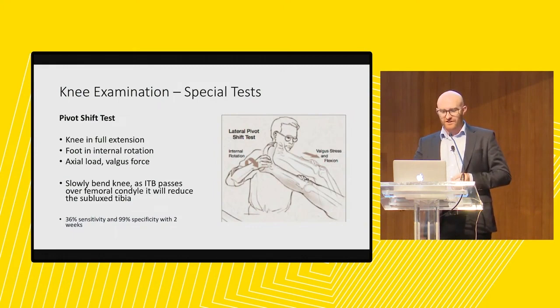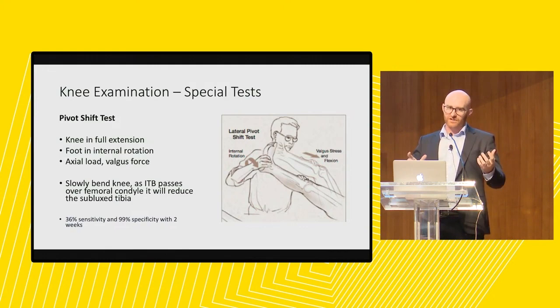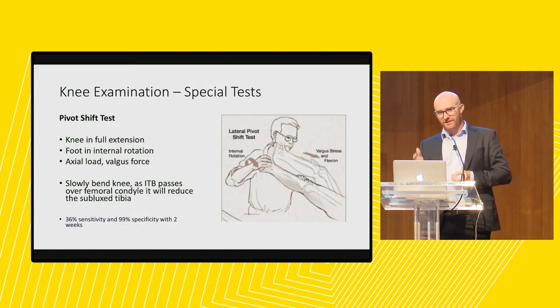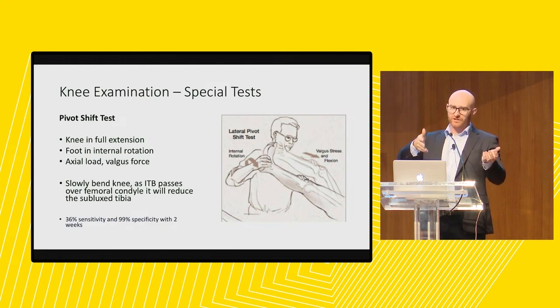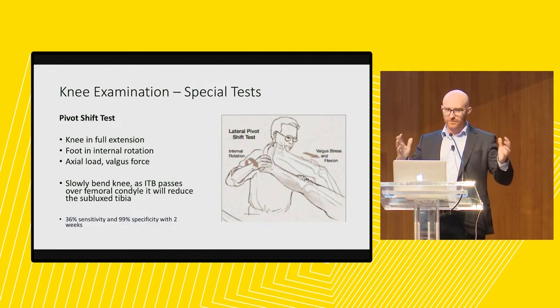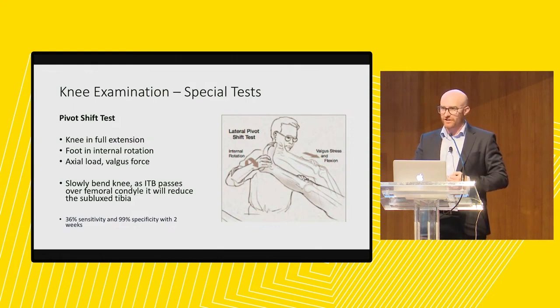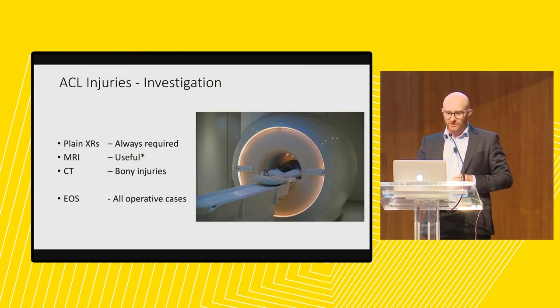The pivot shift test can't be done for acute injuries because they're too sore. It is very specific if you have a positive result. What you're doing is subluxing the tibia on the lateral side off the femur. When the knee is in extension, the iliotibial band is a knee extensor; in flexion, it's a flexor. So holding the tibia subluxed, as we bend and load the knee, the IT band flicks over the lateral femoral condyle and reduces the tibia back under the femur. Very specific, but probably won't be positive early on due to pain.